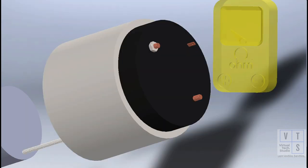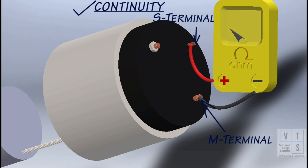Check for continuity across magnetic switch S and M terminal. If no continuity exists, pull-in coil is open and should be replaced.